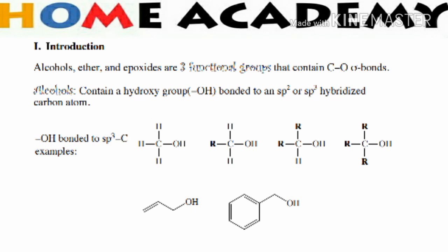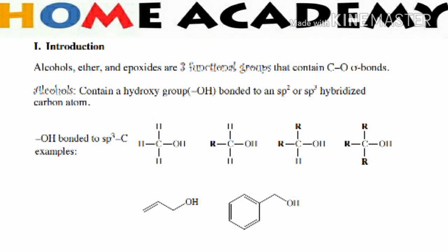The first example is sp3 carbon with a hydroxyl group attached to it — RCH2OH. This is a hydrogen group of sp3 carbon with a hydroxyl group.